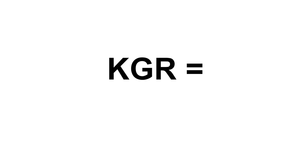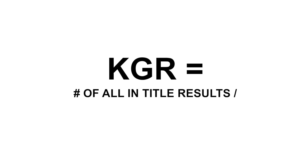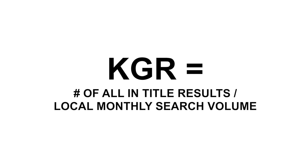The formula that makes up the Keyword Golden Ratio goes like this. The KGR equals the number of allintitle results divided by the local monthly searches. This is important: the local monthly searches need to be below 250.